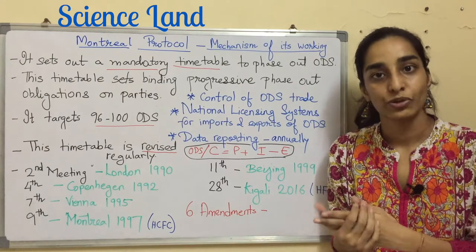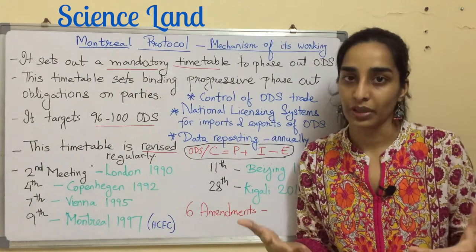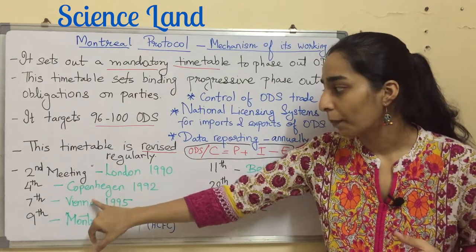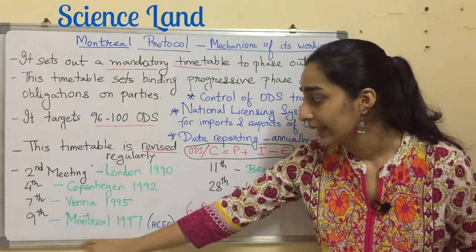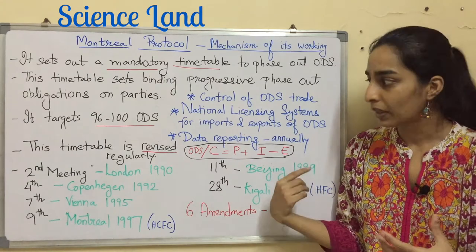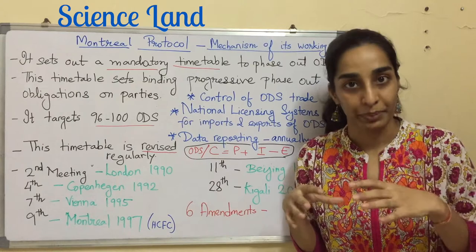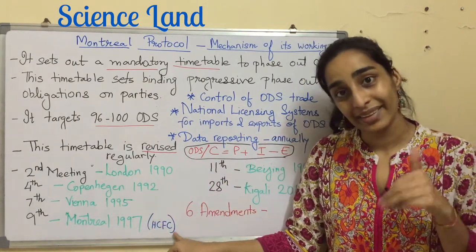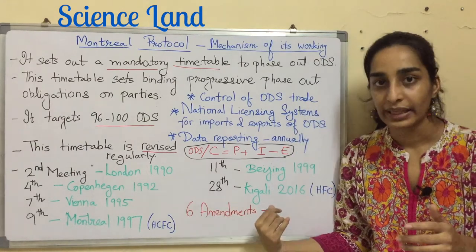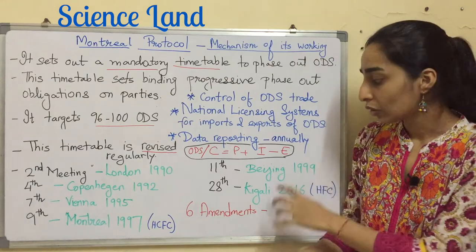There are meetings that occur on a regular basis, also known as amendments, which strengthen the Montreal Protocol. The second meeting was held in London in 1990, 4th in Copenhagen 1992, 7th in Vienna 1995, 9th in Montreal 1997, 11th in Beijing 1999, and 28th in Kigali 2016. For example, in the second meeting CFCs were added to the timetable to phase out; in the 9th meeting HCFCs were added; and in the 28th meeting HFCs — hydrofluorocarbons, which are potent greenhouse gases — were scheduled to phase out.